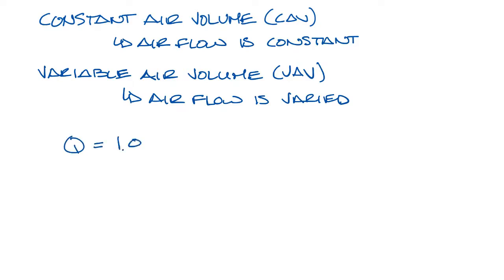Let's look at the load equation and see what that means. The load equation is 1.08 times CFM times delta T. So if you vary the CFM, that's a VAV system. If you vary the temperature, that's a CAV system.